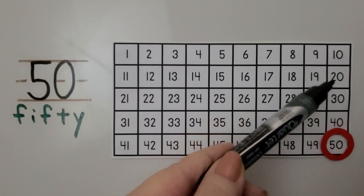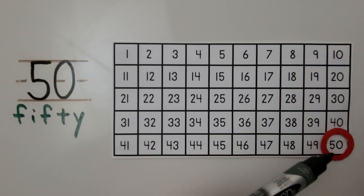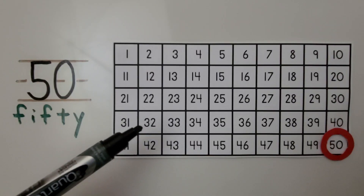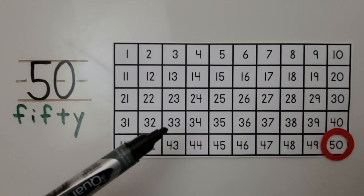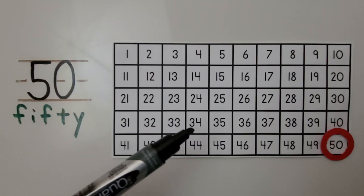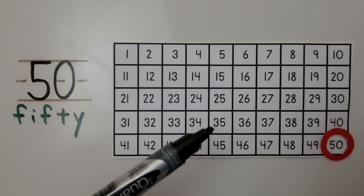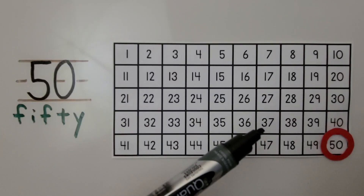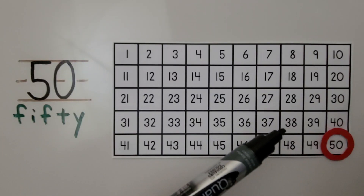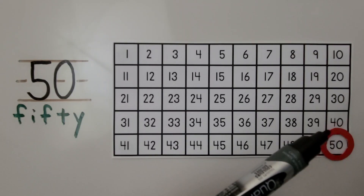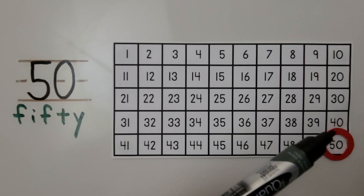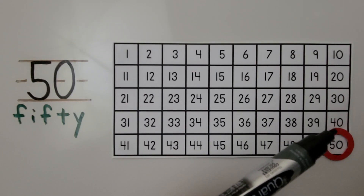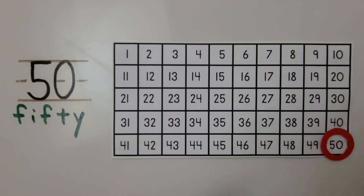See how they all end with a 0? Then we have 31, 32, 33, 34, 35, 36, 37, 38, 39, 40. Now the numbers are going to start with a 4 for the 40s.